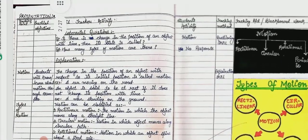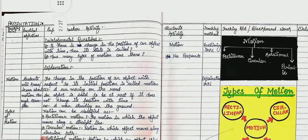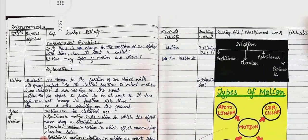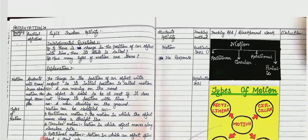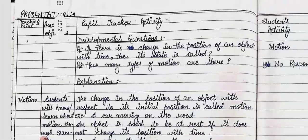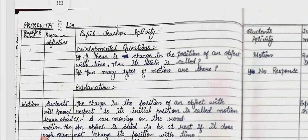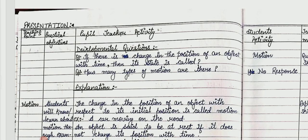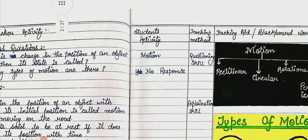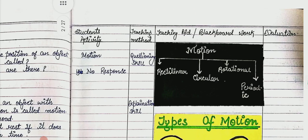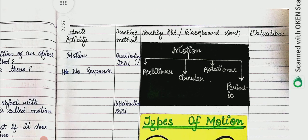After the statement of aim, we note the presentation. The presentation has a broad table with many columns: teaching point, practical objectives, pupil-teacher activities, student activity, teaching method, teaching aids, blackboard work, and evaluation.